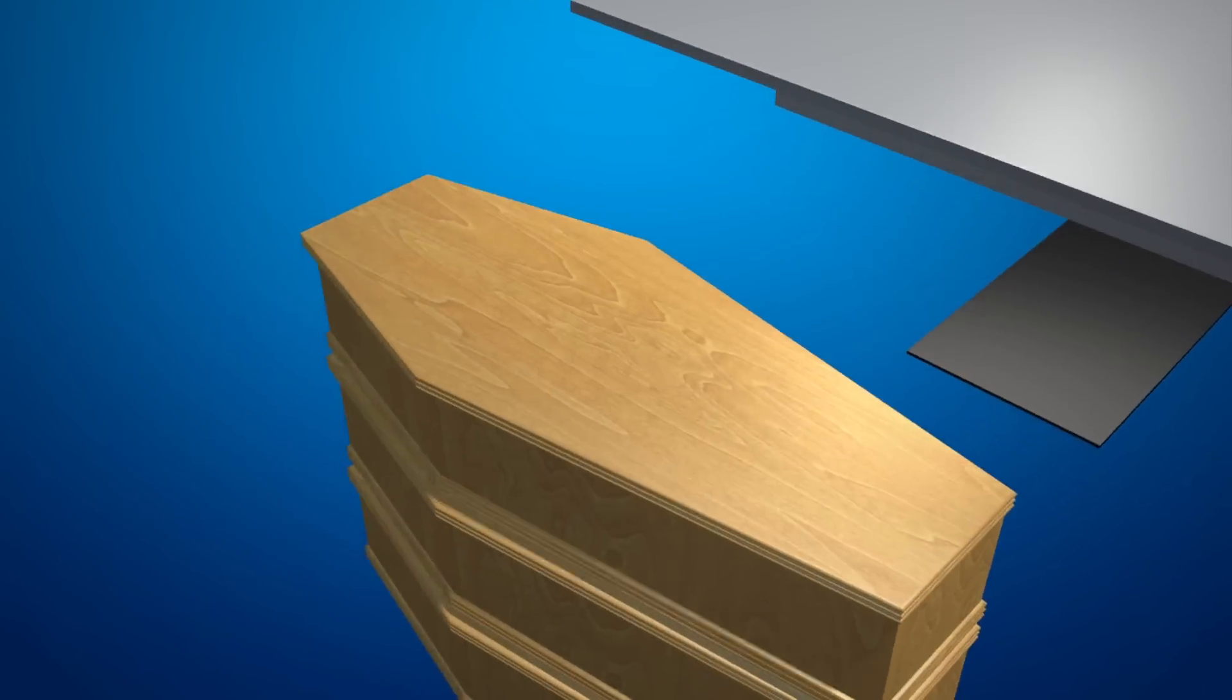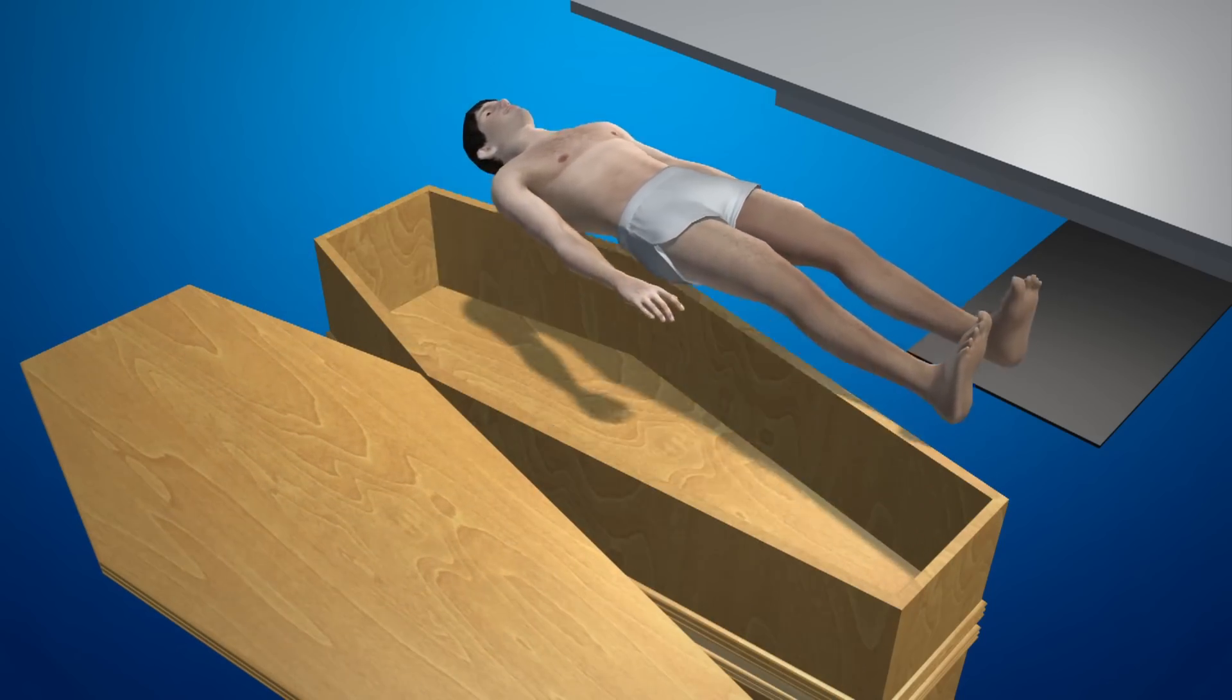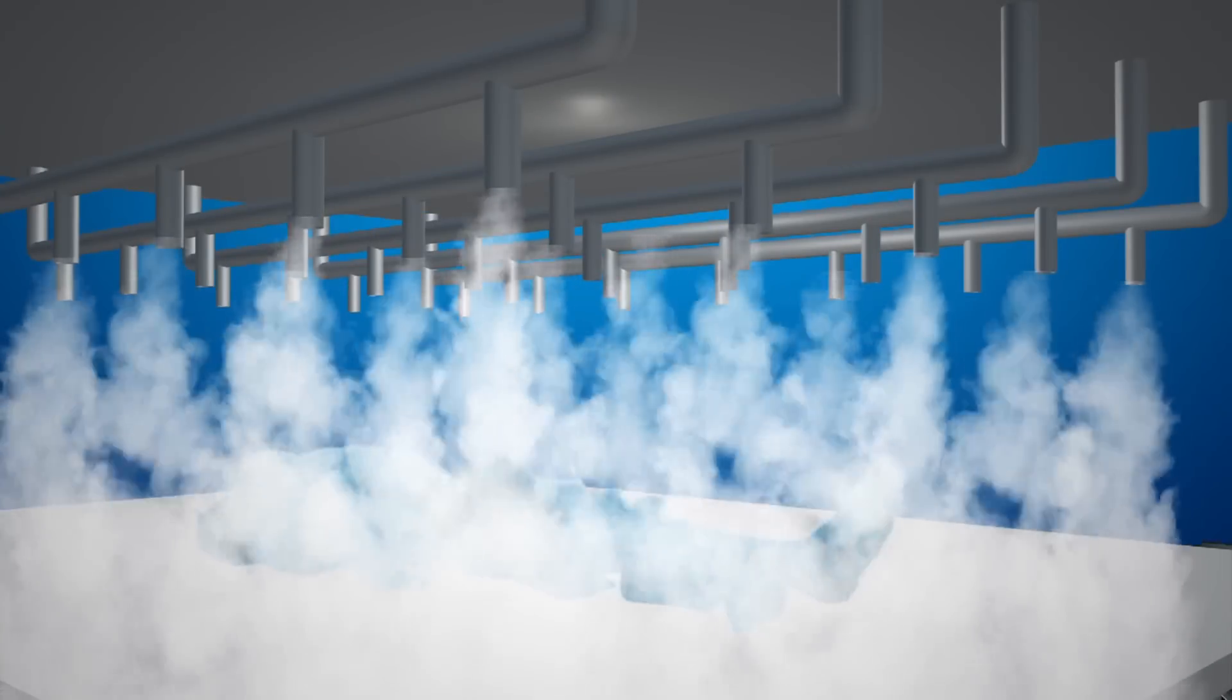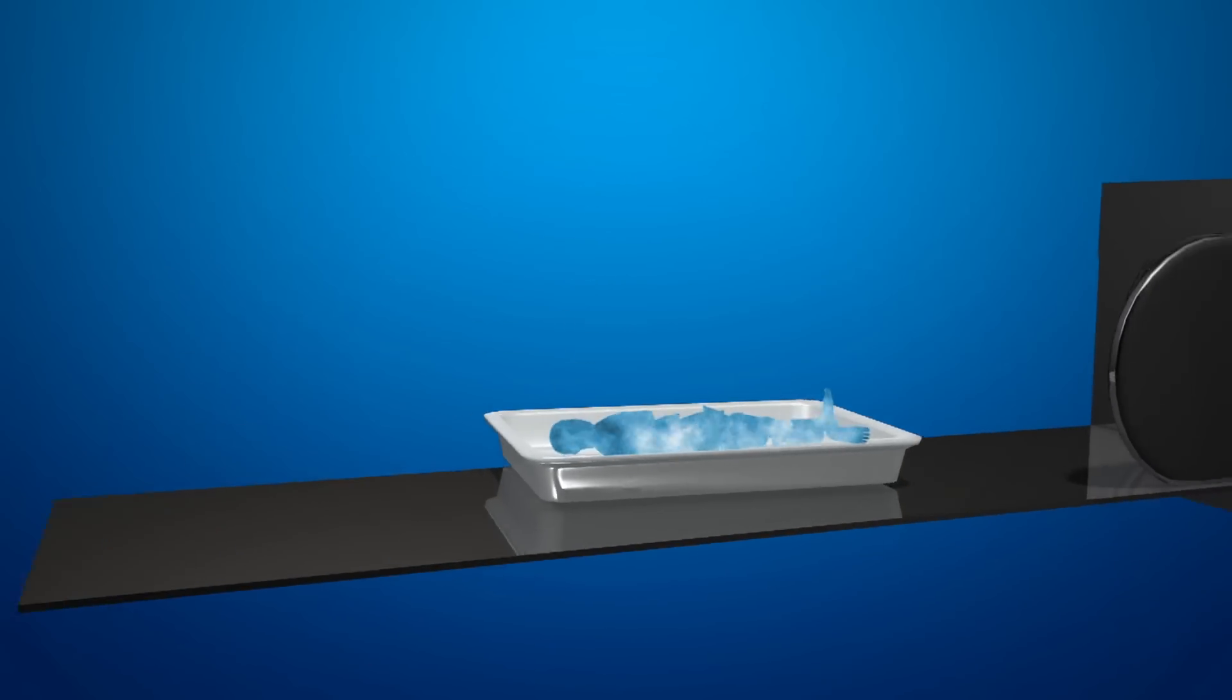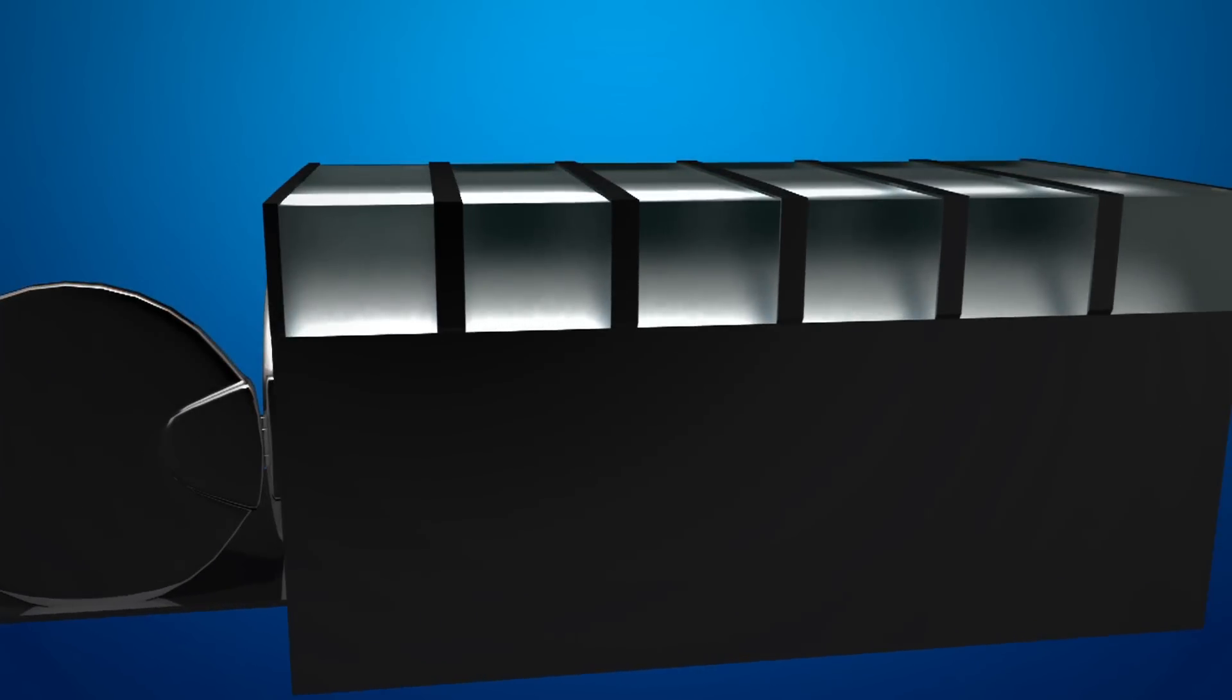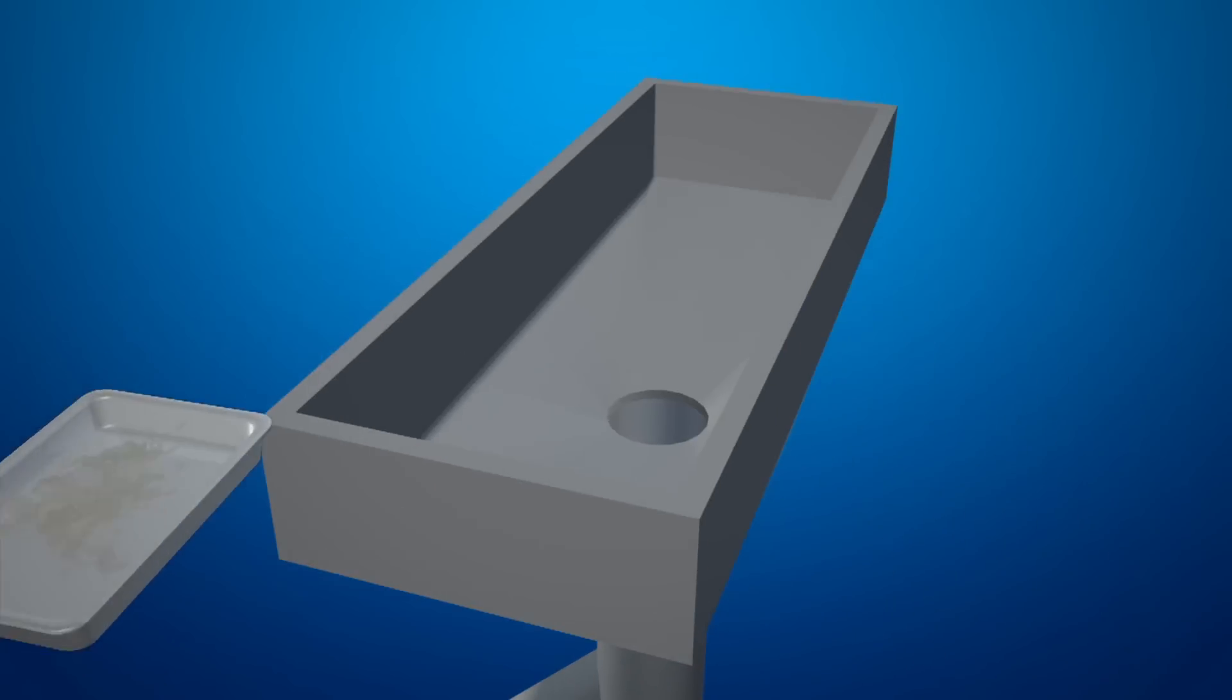The process is similar to that of freeze drying. First, the body is frozen to minus 18 degrees Celsius and submerged in liquid nitrogen. Under such low temperatures, soft and elastic materials become hard and brittle.